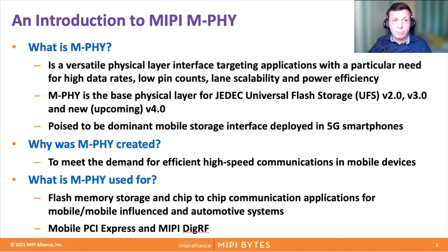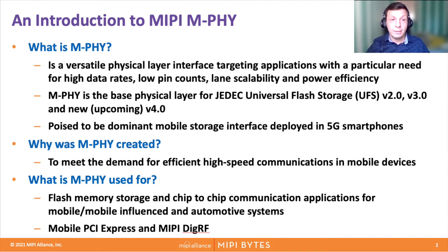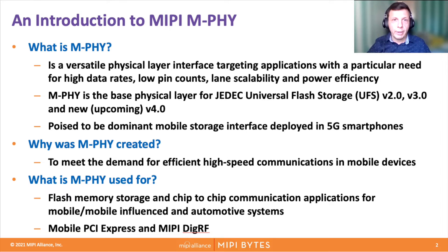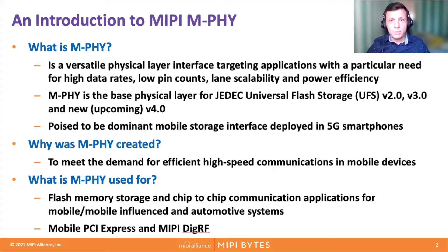Amphi is a versatile physical layer targeting applications with particular need for high speed, low pin counts, and lane scalability, and it has to be very power efficient. Amphi is a base physical layer for JEDEC UFS storage — UFS 2.0, 3.0, and the upcoming 4.0. It is poised to be the dominant mobile storage interface deployed in the 5G-enabled smartphones and mobile ecosystem.